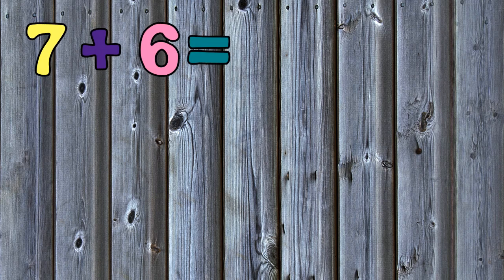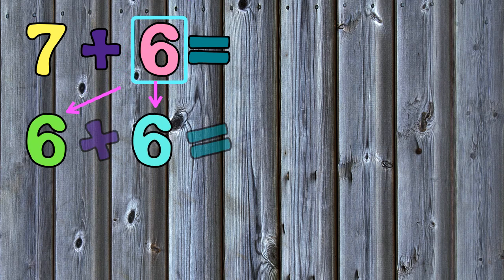Let's look at another example, 7 plus 6. Again, to add this near double, we will start with the double fact. To get the double fact, we will double the lowest or smallest addend, the 6, and add them together.